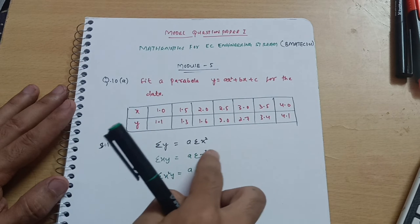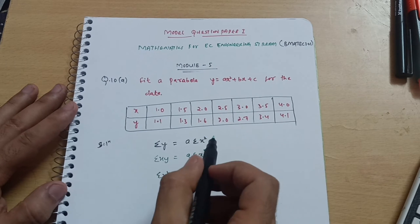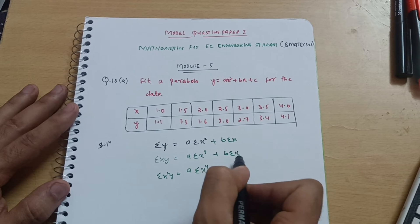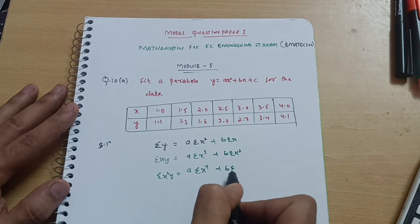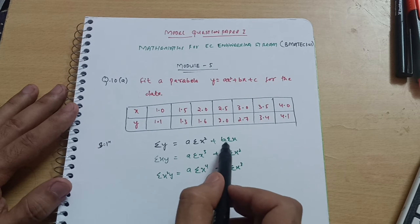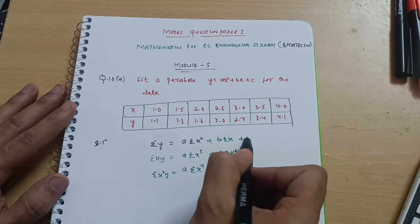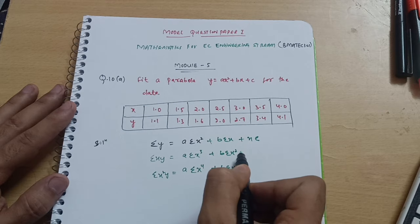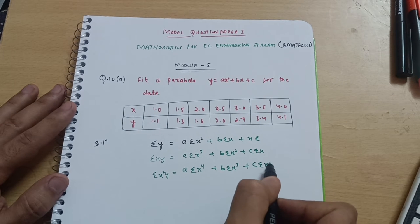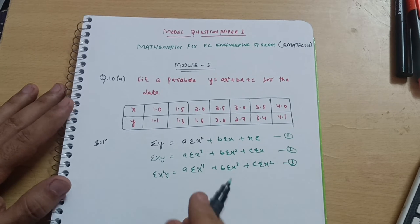The terms continue in increasing order: a·Σx², a·Σx³, a·Σx⁴, plus b·Σx, b·Σx², b·Σx³ — so b terms also go in increasing order. Then plus nc, c·Σx, and c·Σx². This gives you the three standard formulas for this particular question.